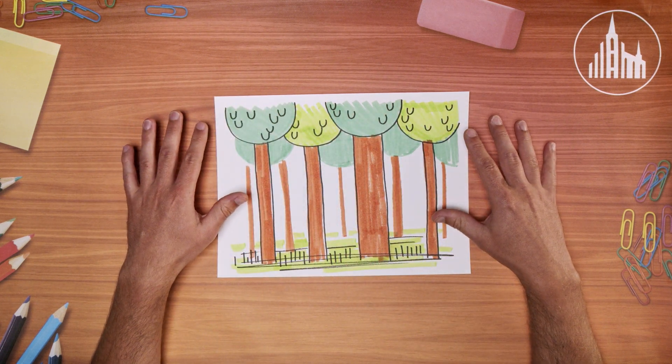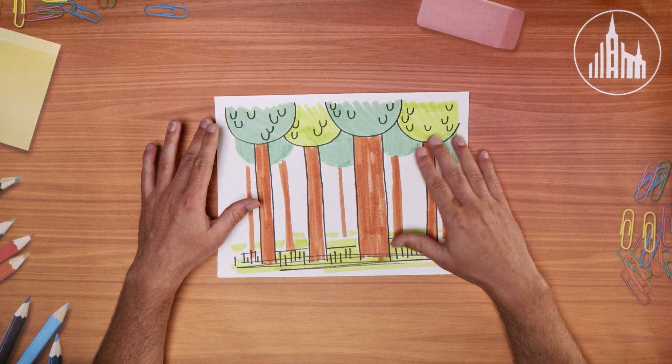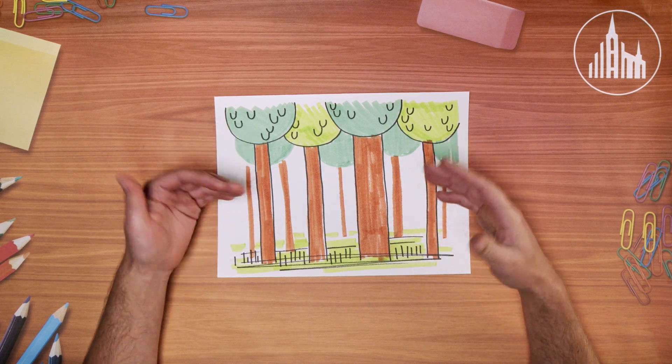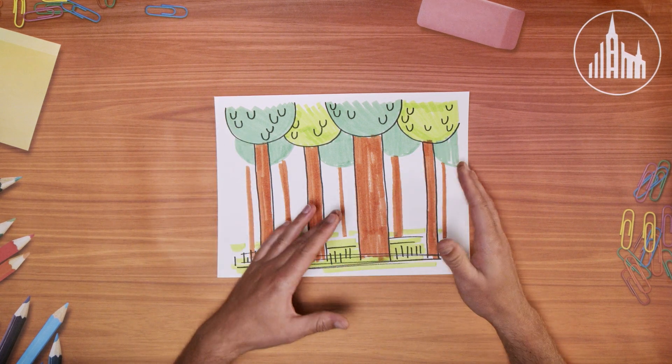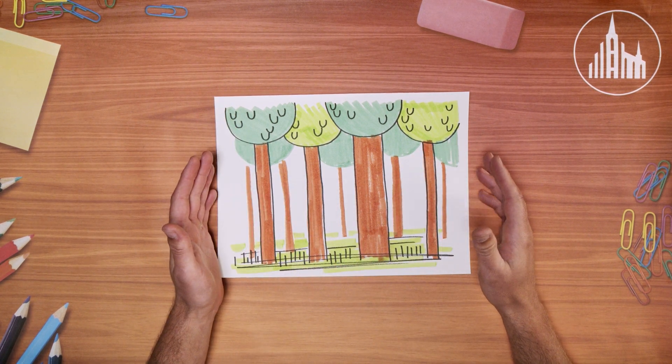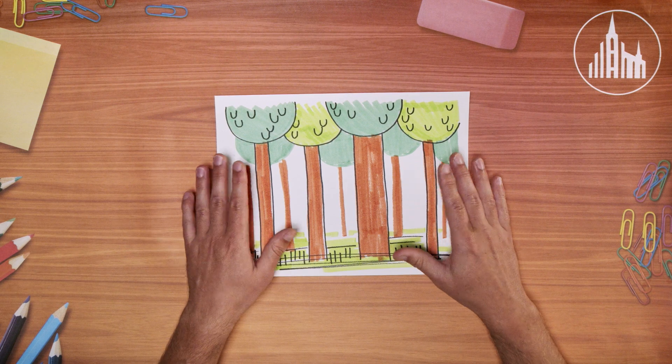And this is a special set of trees because this is where Joseph Smith saw God the Father and Jesus Christ and where he gained a testimony of the gospel which he was always true to. And so today we want to draw that and talk about how we can be more faithful to our testimonies just like Joseph Smith.